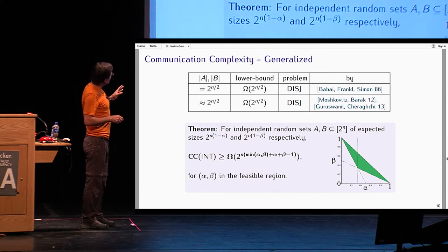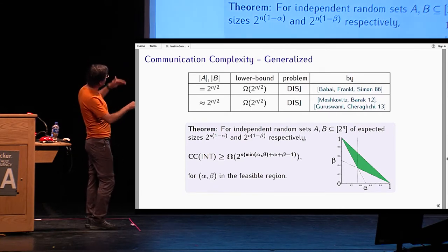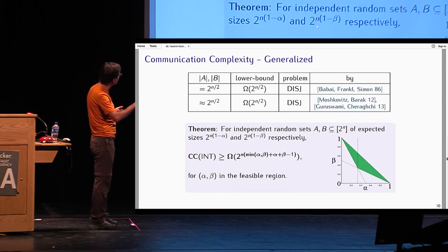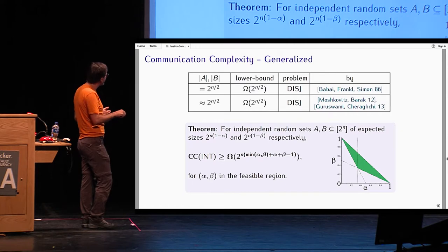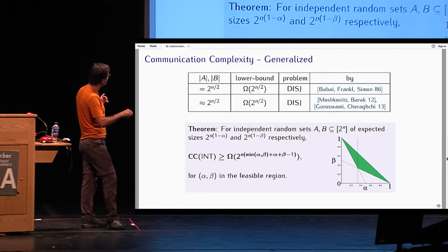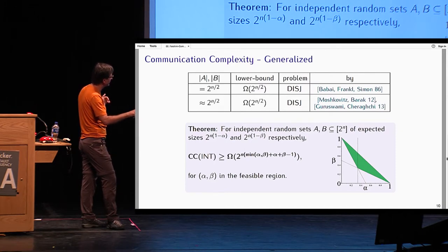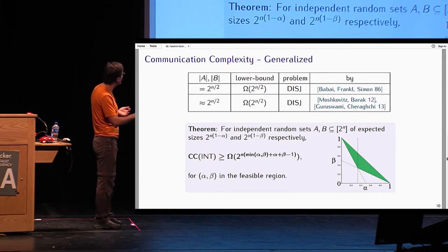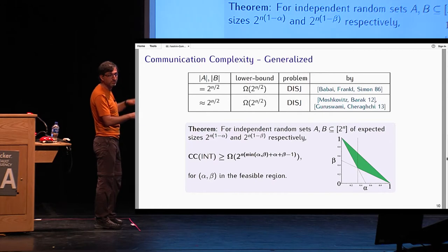The first result of our paper is that we extend this result and show that for independent random sets A and B in a universe of size 2 to the N of expected sizes 2 to the N times 1 minus alpha and 2 to the N times 1 minus beta, the communication complexity of the set intersection problem is at least this, for alpha and beta in this feasible region here. For example, if you put alpha equals one half and beta equals one half, this is 2 to the N over 2, 2 to the N over 2, which is what is here. You get half plus half plus half minus 1, which is a half, so it's omega of 2 to the N over 2, so it matches that.